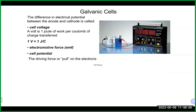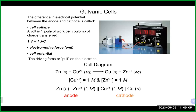Let's talk about the potential difference between the anode and the cathode. The cell voltage — a volt is one joule of work per coulomb of charge transferred. It's also sometimes referred to as the electromotive force (EMF) or the cell potential. In problems, you may be asked to solve for the cell voltage, EMF, or cell potential — they're all asking you to solve for the voltage of the cell.